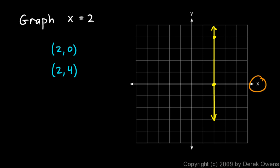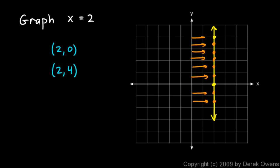Now, there's one thing that confuses people here. My x-axis is horizontal, so when people see x equals 2, they sometimes expect a horizontal line. Well, the x-axis is the horizontal axis, but the graph of x equals 2 is a vertical line — because this line is the line on which every single point has an x value of 2. Every single point here is 2 over from the axis, 2 to the right horizontally. This line satisfies this equation because the x value of every single point is 2. So the line x equals 2 really is a vertical line.